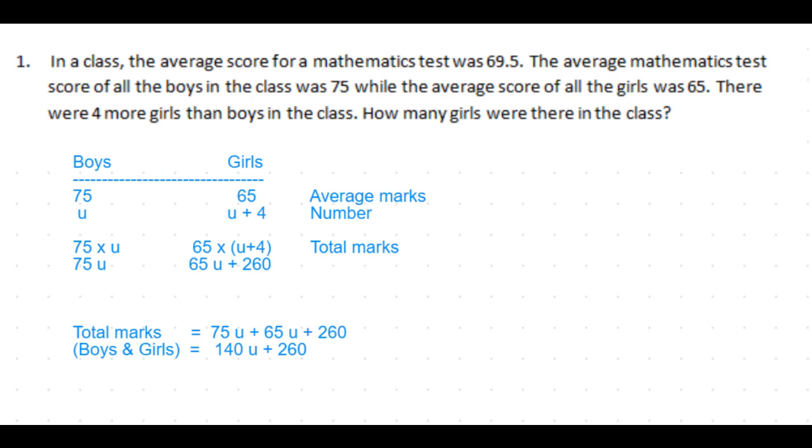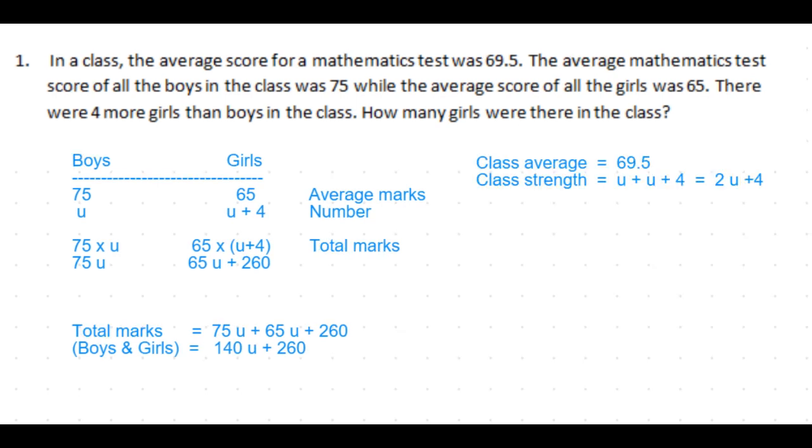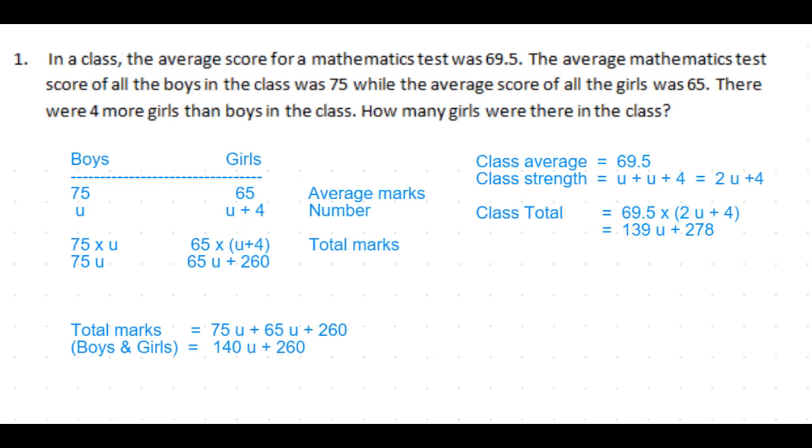But as per the question, the class average is given as 69.5, and the class strength, that is the total number of girls and boys together, we know it is 2u plus 4. U is the number of boys and u plus 4 is the number of girls, so total class strength is 2u plus 4. If we multiply the average times the strength, we get the total class marks.